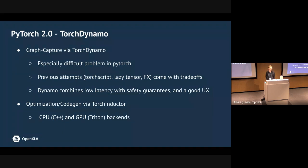Dynamo is the latest addition to this group of front ends. It combines low latency — it can capture and execute a trace by interposing at Python at the top of the call stack, removing the latency associated with tracing in lazy tensor — while also providing safety guarantees so we can be sure the trace is safe to execute, recompiling if not. The final tenant is a good user experience by falling back to eager if something can't be compiled.